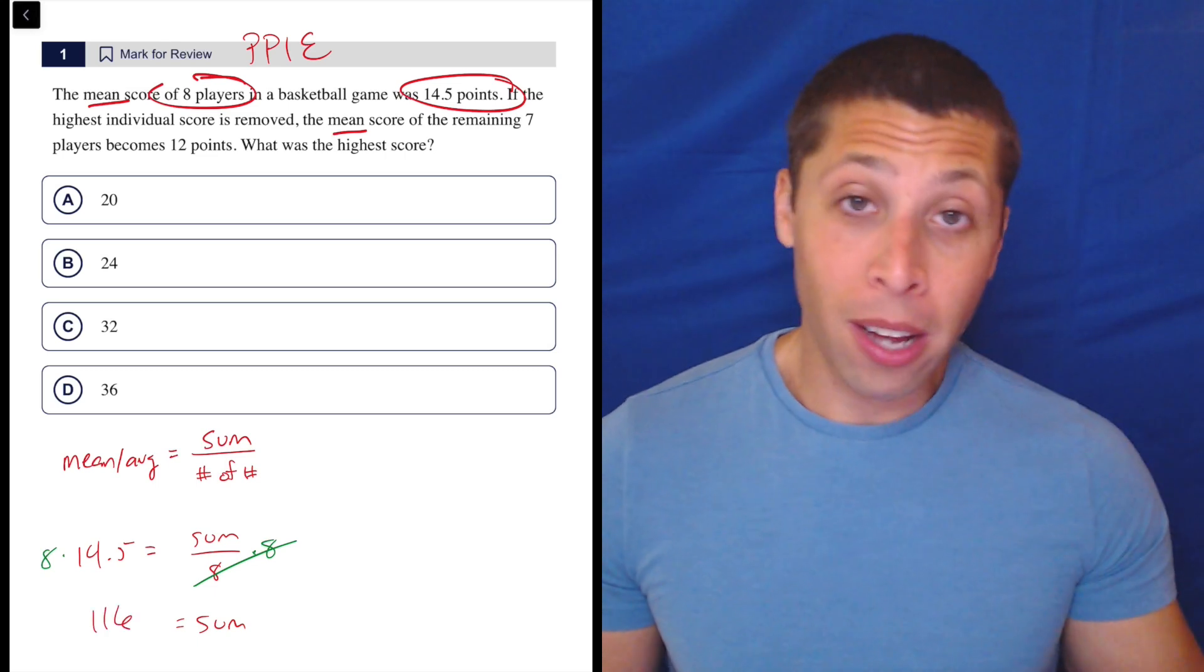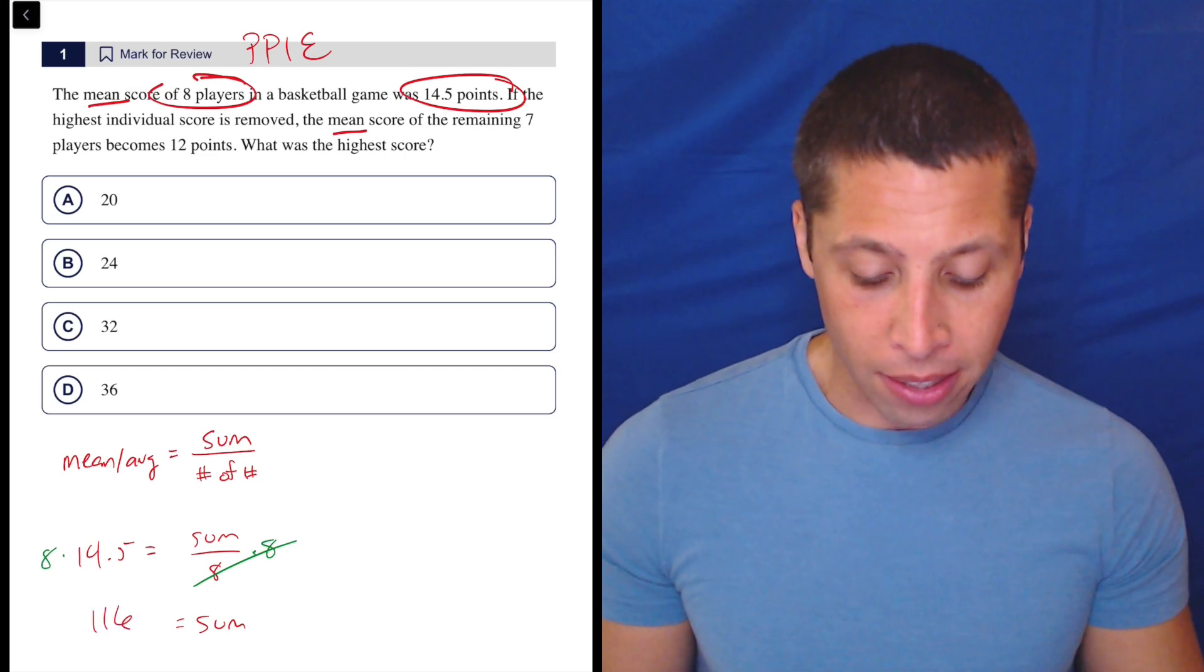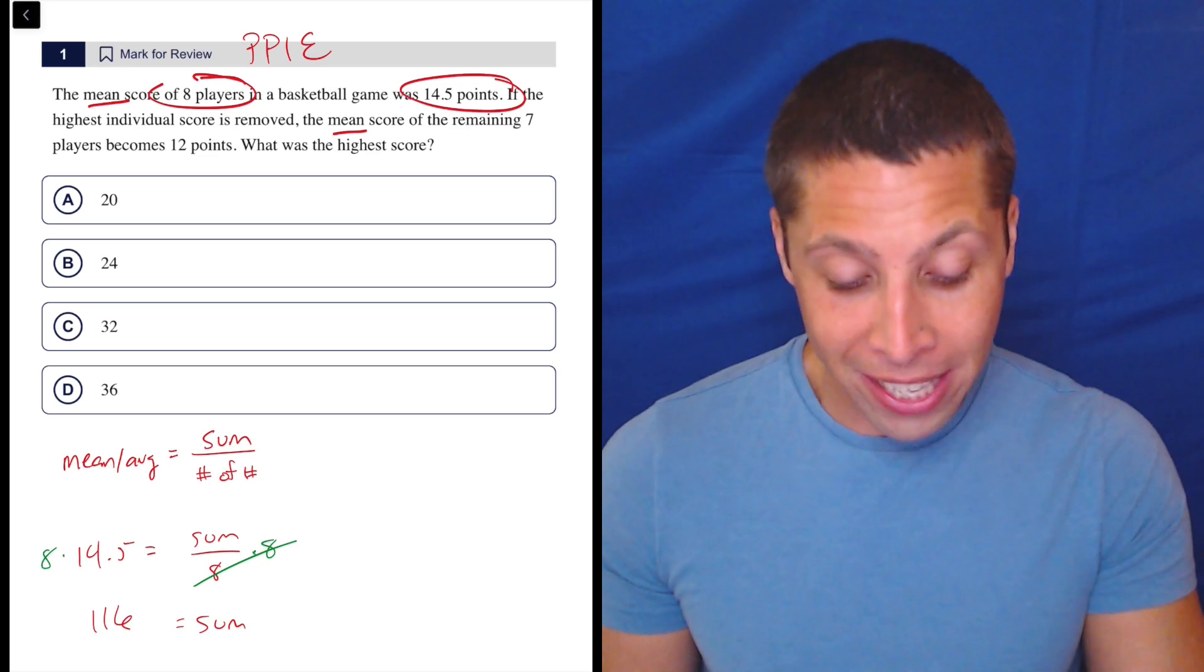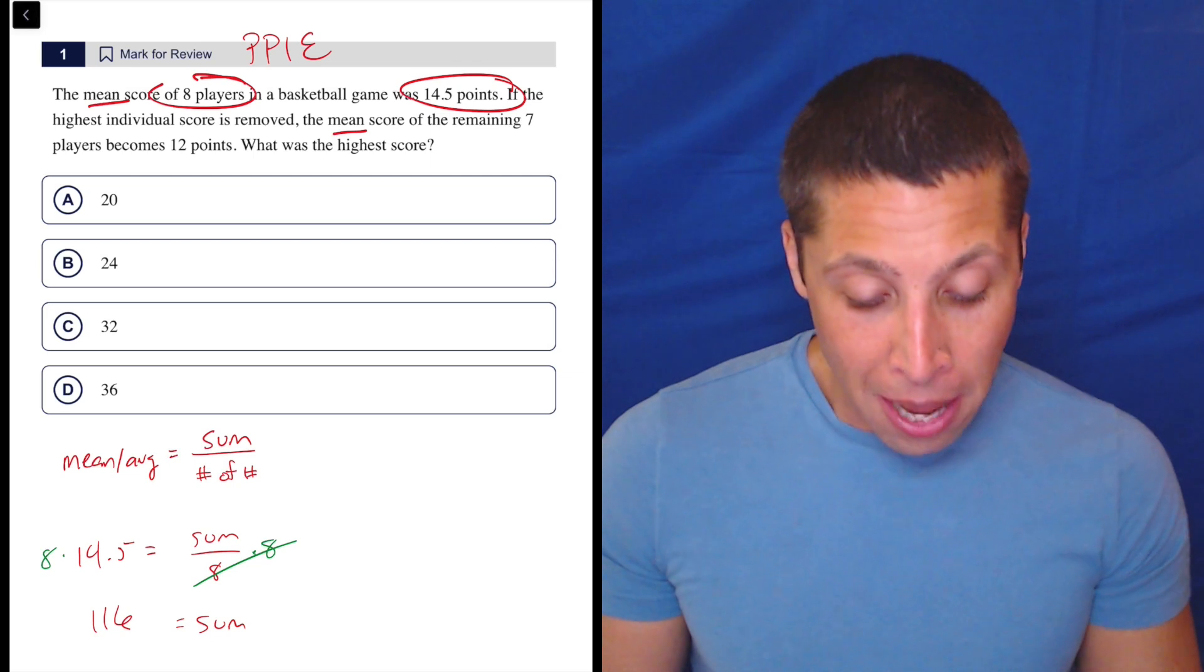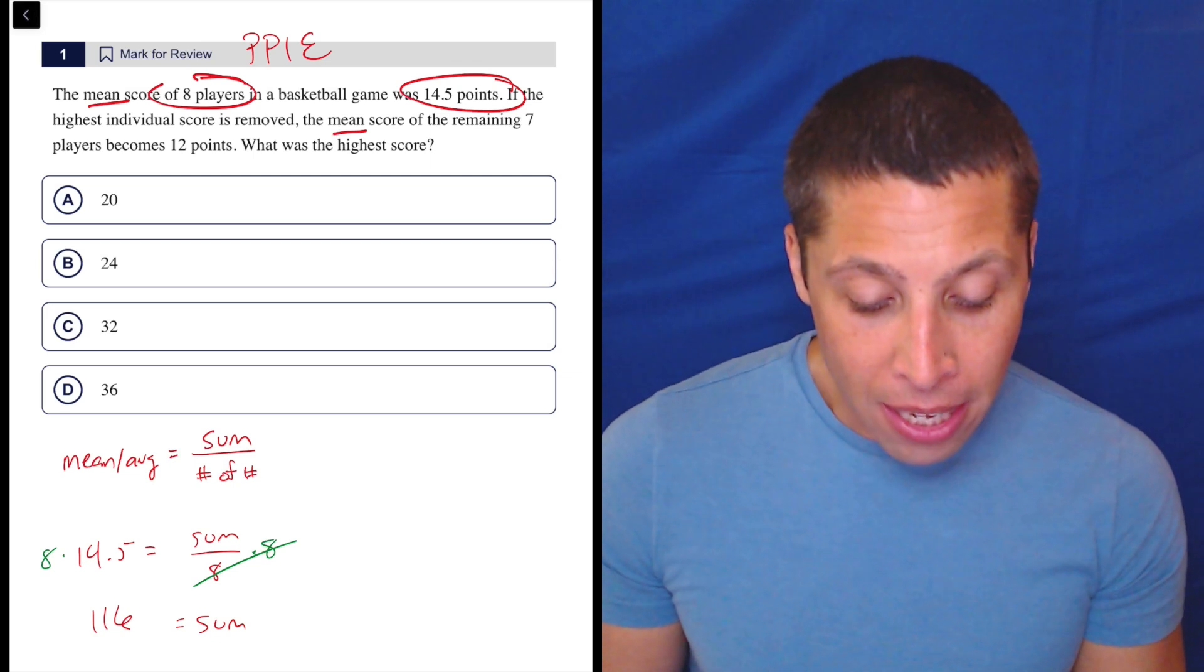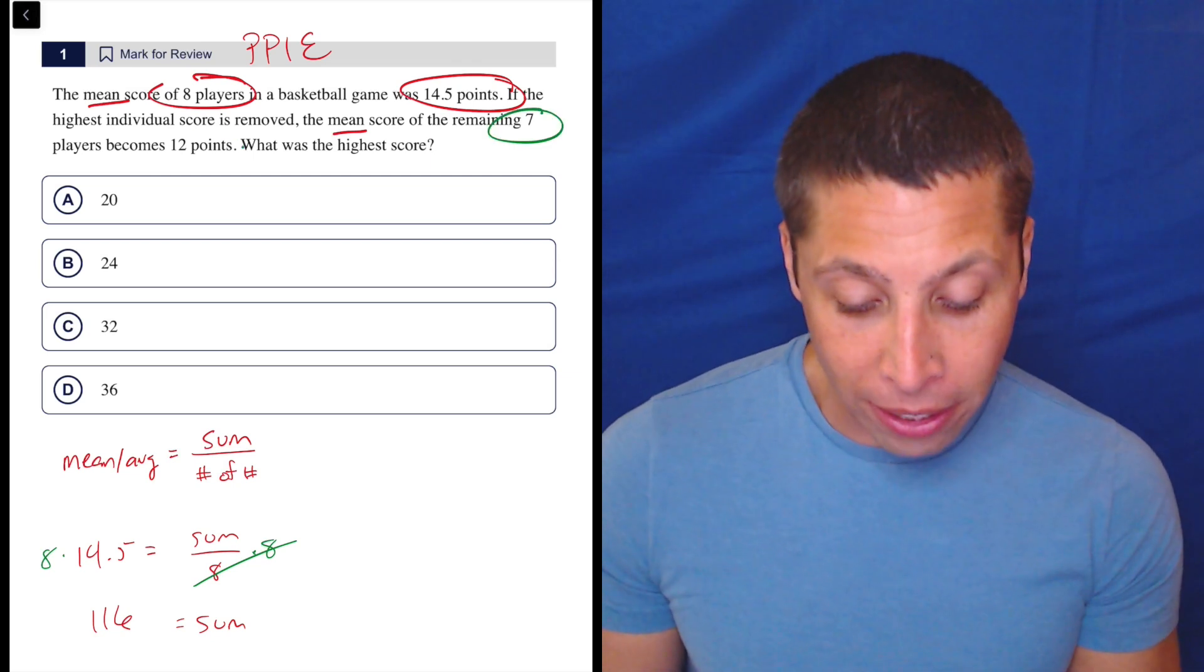Now, I don't really even bother to pause to think about what that means because what matters to me next is I can't do anything with that. Obviously, it's not an answer. There's some more to the question. But then I think about it again. The mean of the remaining seven players is 12 points.